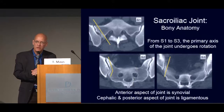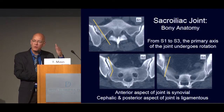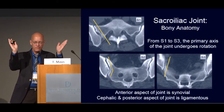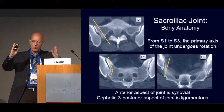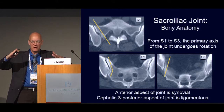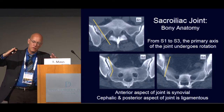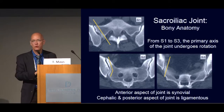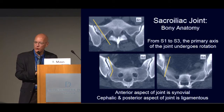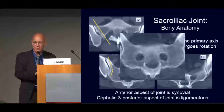The joint line changes as we go from cephalad to caudal. At the S1 level it's usually very oblique, posteromedial to anterolateral. As you go caudally it starts to swing, becoming almost vertical at S2, and at S3 it becomes posterolateral to anteromedial. So it undergoes a very complex curvature from cephalad to caudal. These CT illustrations also show, as all radiologists know, that the sacrum — the holy bone — is the source of all very creepy anthropomorphic images that derive from radiology.